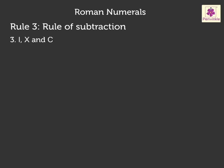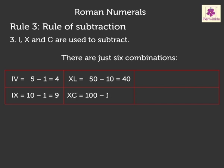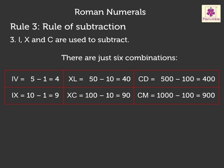I, X, and C are the only symbols used to subtract. There are just 6 combinations: IV equals 5 minus 1, which is 4. IX equals 10 minus 1, which is 9. XL equals 50 minus 10, which is 40. XC equals 100 minus 10, which is 90. CD equals 500 minus 100, which is 400. CM equals 1000 minus 100, which is 900.